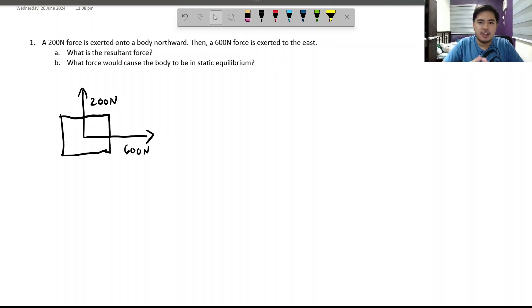Okay, so the first problem is a 200N force is exerted on a body northward. Then, a 600N force is exerted to the east. The first question, what is the resultant force? And the second question, what force would cause the body to be in static equilibrium? First, let's look at the first one. What is the resultant force?